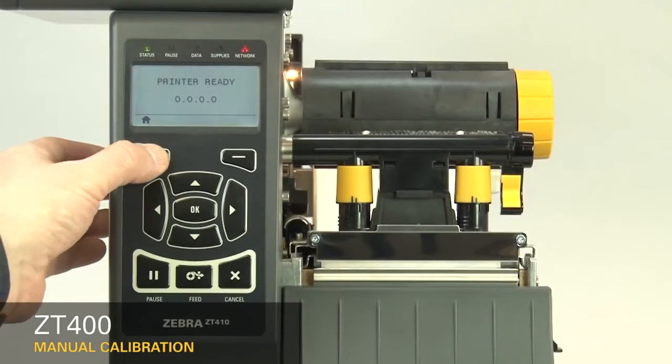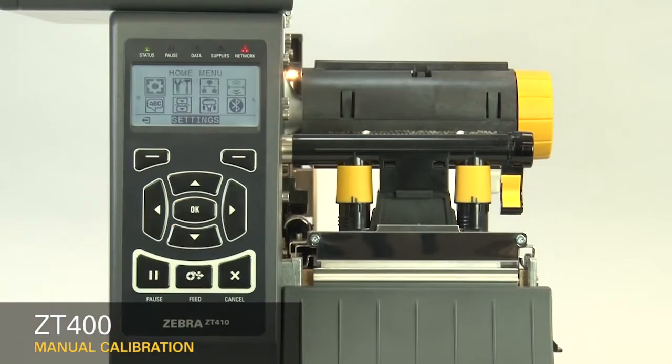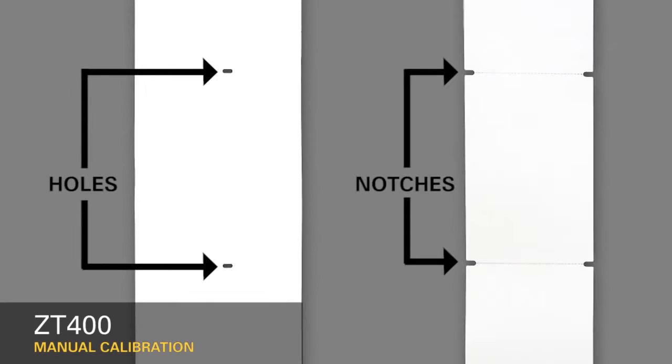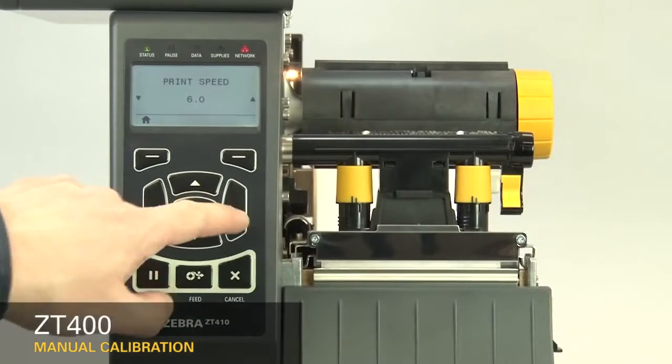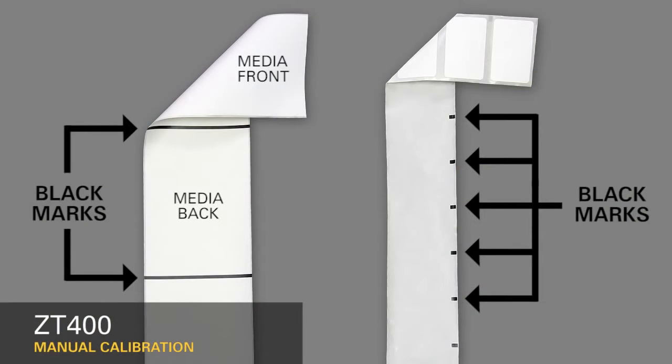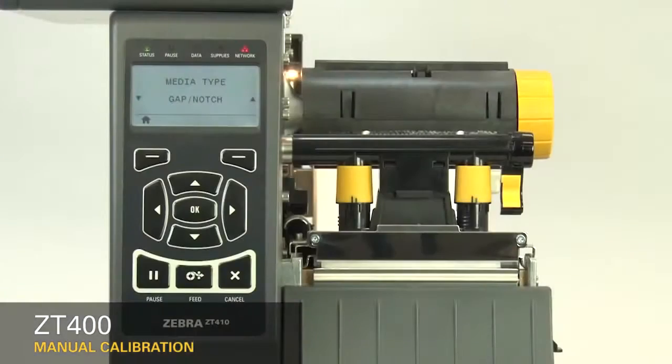First, select your media sensing feature in the menu. If your media has a gap, also referred to as a web, or has holes or notches, select Gap Notch in the menu. If your media has a black mark on the underside of the media, select Mark in the menu.